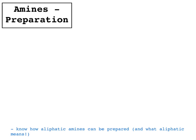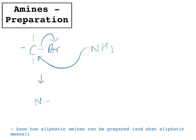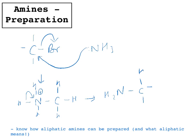To make aliphatic amines — you've come across this in Chem 2 — one way is to use a haloalkane, so it could be bromo, and use ammonia. The ammonia will attack the carbon, the bromine will be kicked off, creating an intermediate with a positively charged nitrogen, and then one of the hydrogens will leave to form NH2 attached to the carbon. These groups can be anything; as long as you've got a haloalkane and ammonia, you can form aliphatic amines.